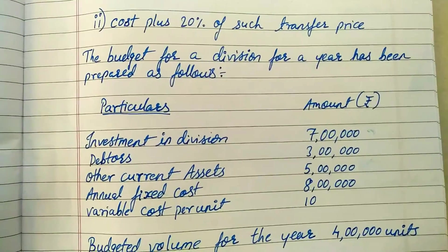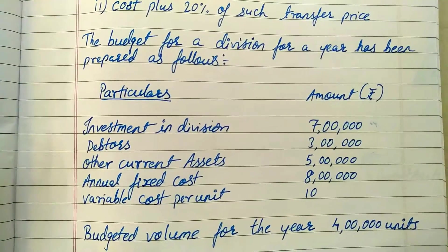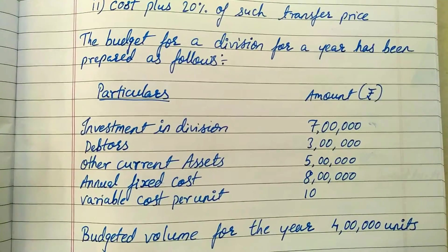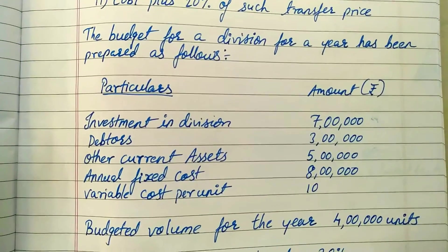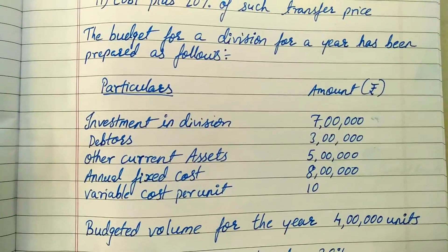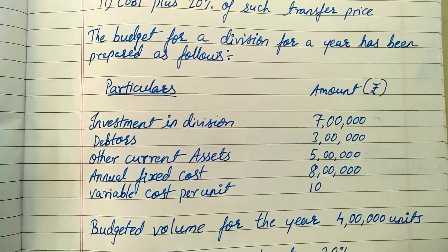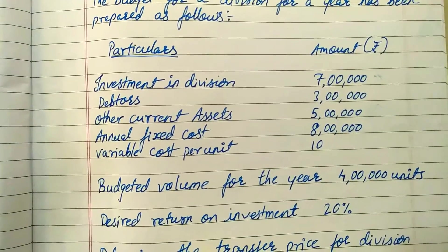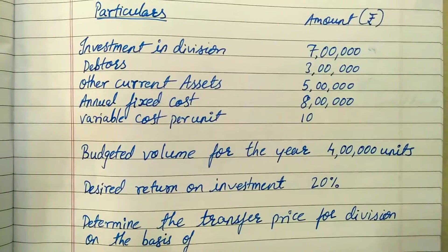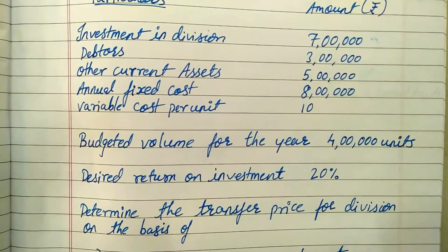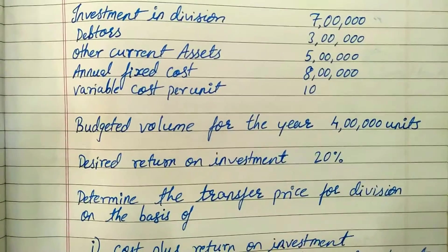To solve the question they have given us some data. The budget for a division for a year has been prepared as follows: investment in division is seven lakh rupees, debtors are three lakhs, other current assets five lakhs, annual fixed cost eight lakhs, variable cost per unit is 10 rupees, budgeted volume for the year is four lakh units, and the desired return on investment is 20 percent.